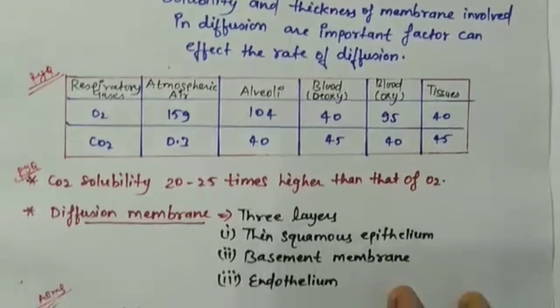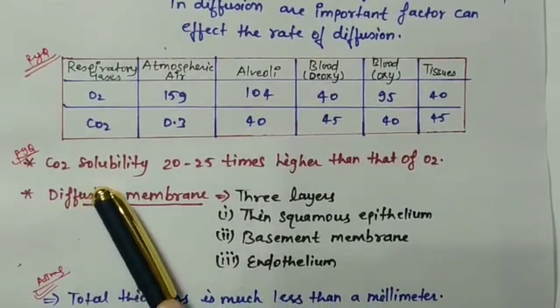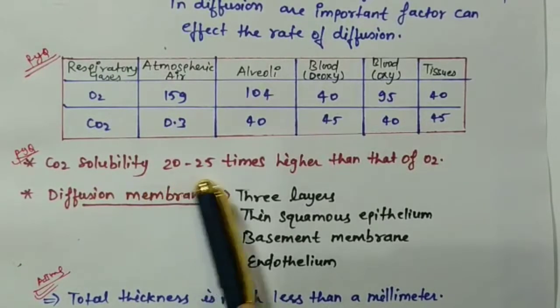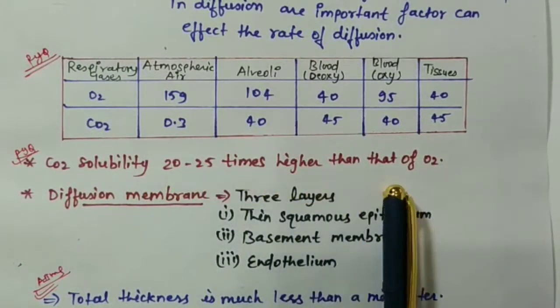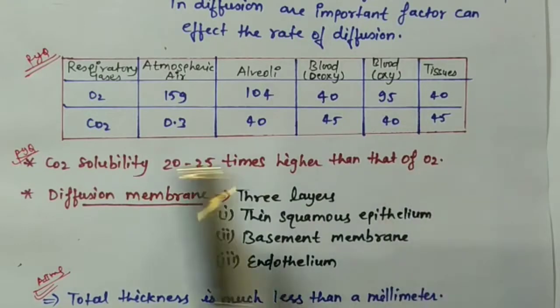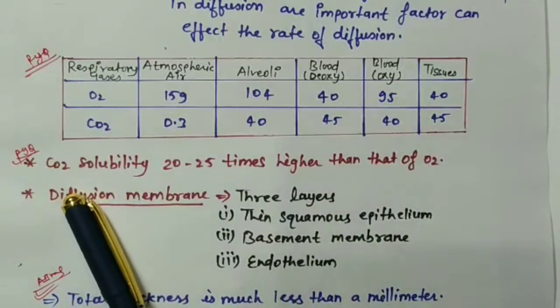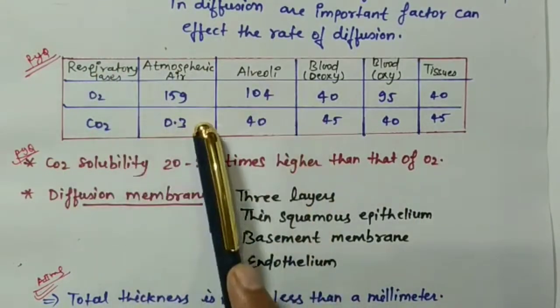Now let's look at an important NCERT line: CO2's solubility will be 20 to 25 times higher than O2. This is an important line.